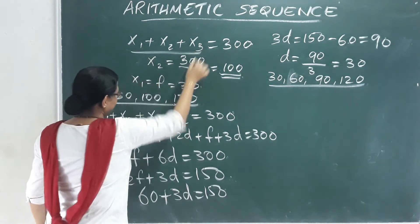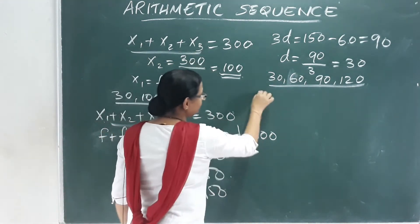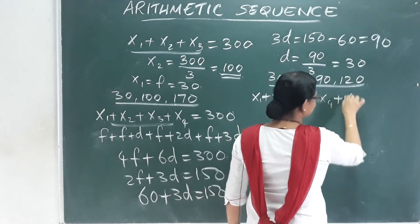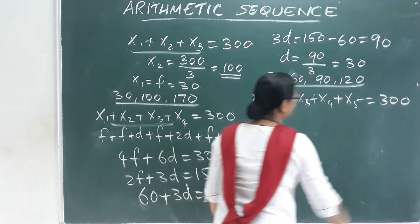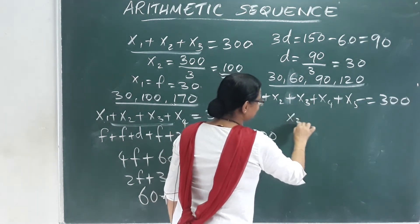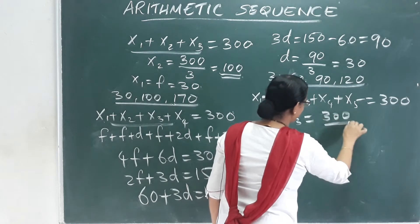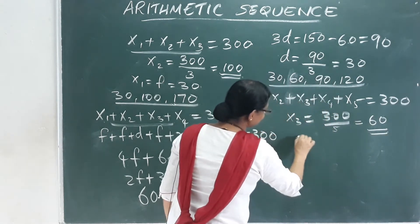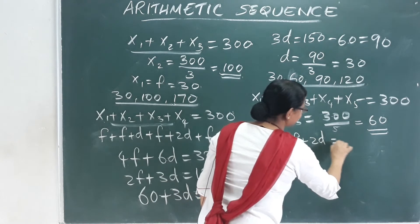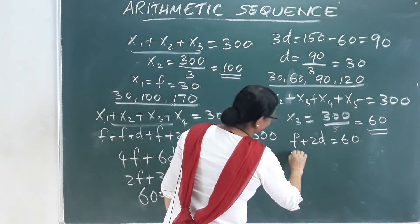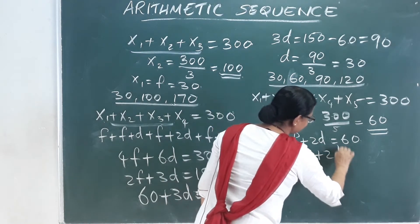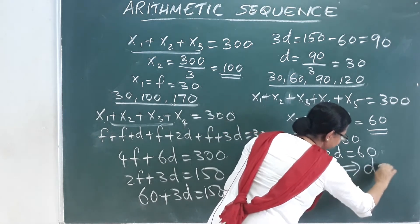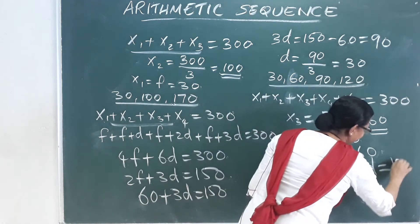For five terms: x1 plus x2 plus x3 plus x4 plus x5 equals 300. The middle term x3 equals 300 divided by 5, which equals 60. The middle term is f plus 2D equals 60. Since f is 30, we have 30 plus 2D equals 60, so 2D equals 30, which means D equals 15.